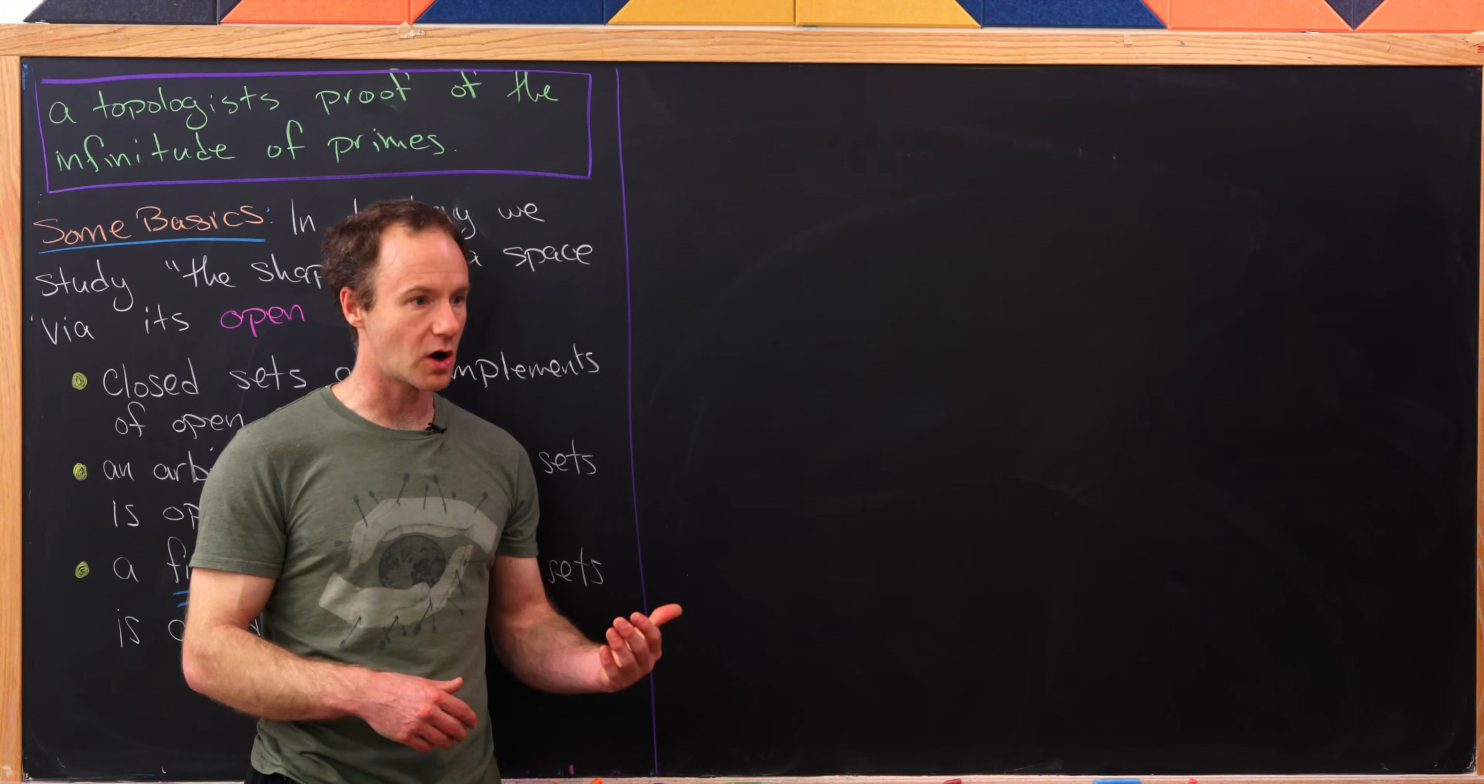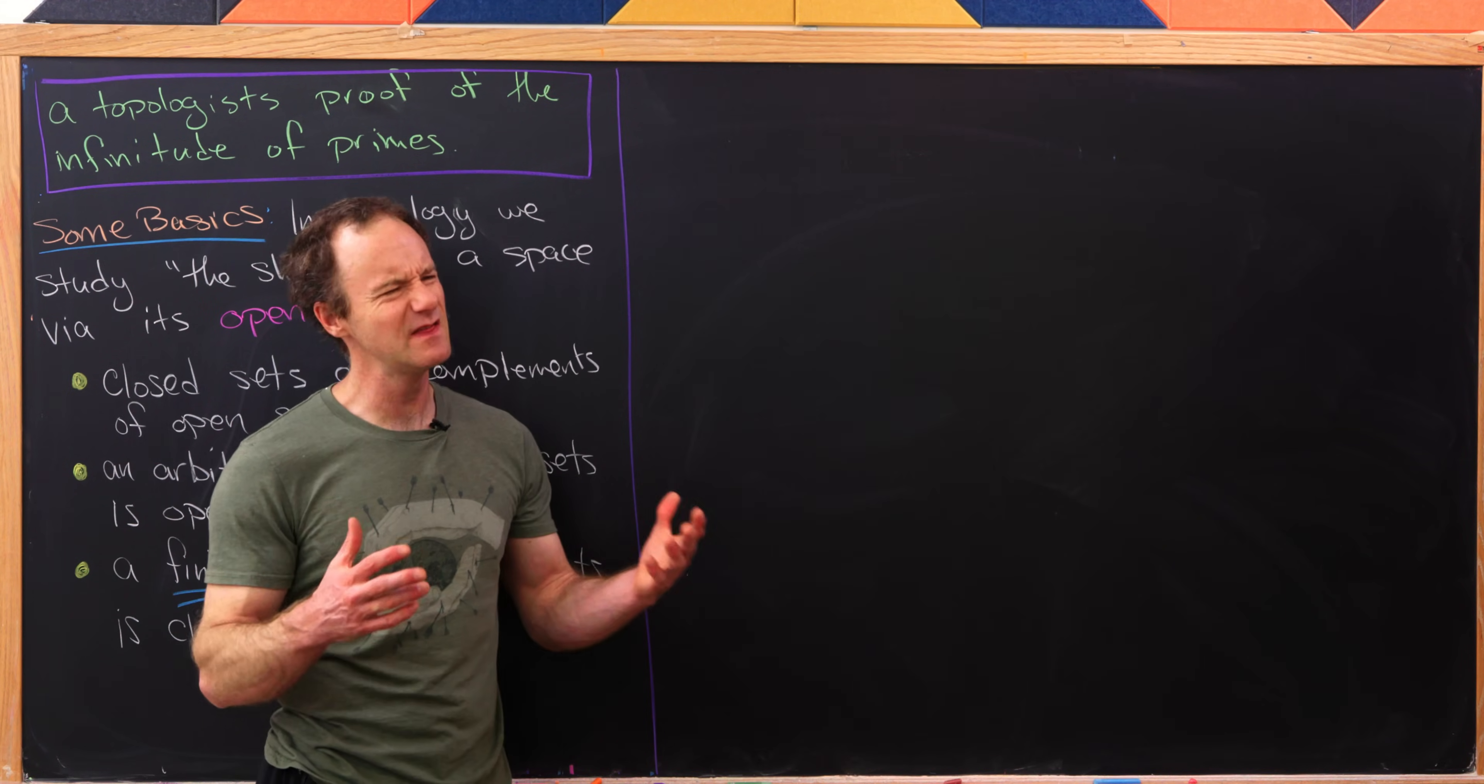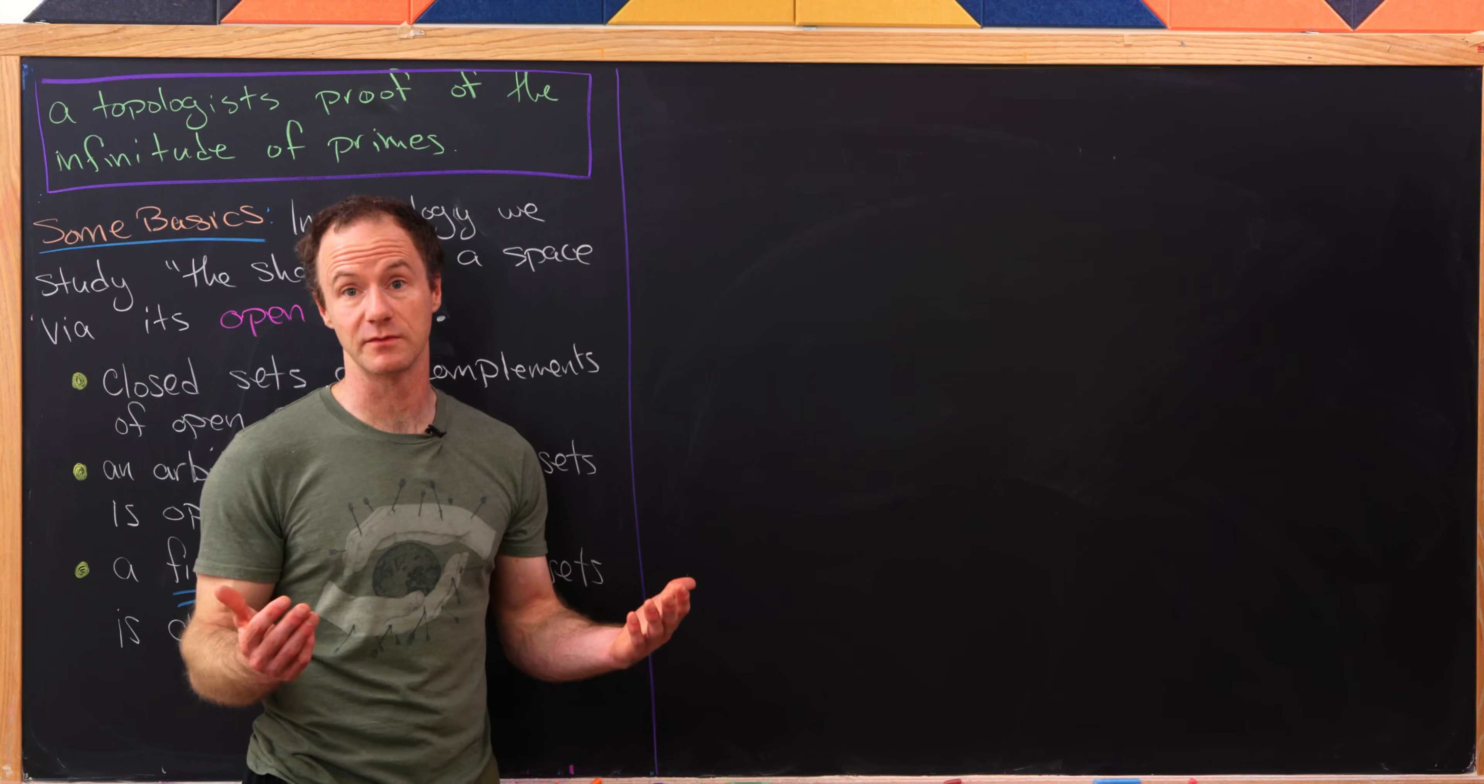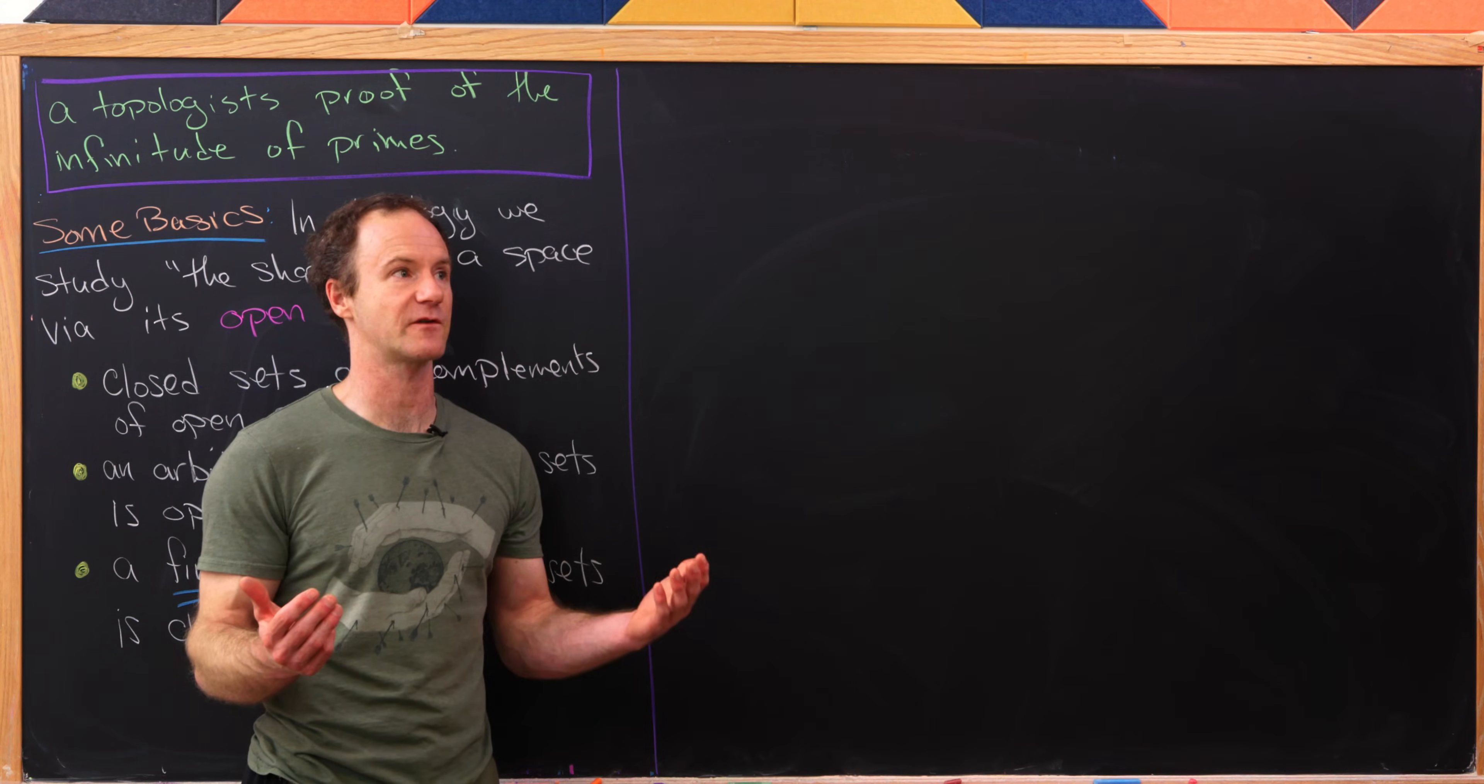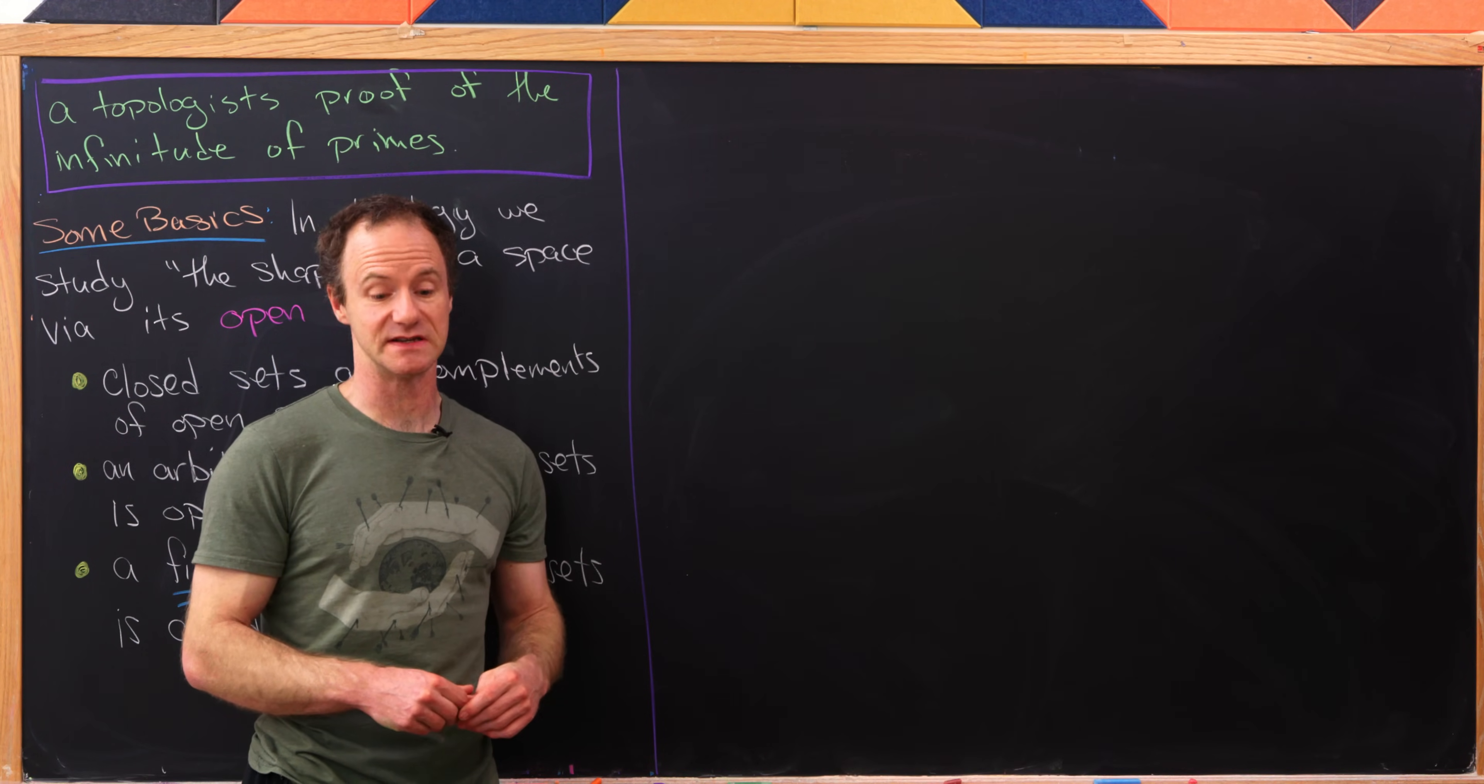And then there are also sets that are both open and closed. In this standard topology on the real numbers, there are only two. And that is the real numbers themselves. So that would be the set from minus infinity to infinity, as well as the empty set.